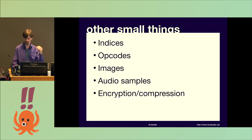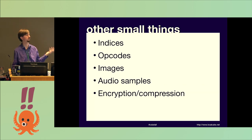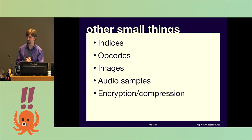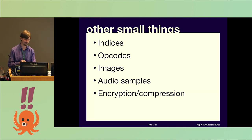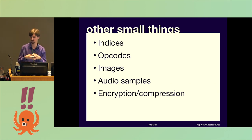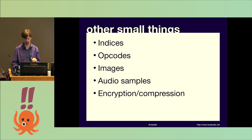Other small things: indices I just talked about; opcodes, which we heard about in earlier talks, are useful for programs but also for things like music. Images are really fun in a hex editor because you can resize it to match the image width and actually see it in the hex view. Audio samples tend to go up and down. Encryption and compression are really easy to recognize but really hard to decode because they both share the similar goal of making data look random — compression needs to pack as much data into as little space as possible, which means making it look random. So I don't have any good solutions for those right now.